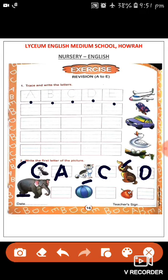Next one. What is this children? This is an elephant. E for elephant. We will write here E. E for elephant.